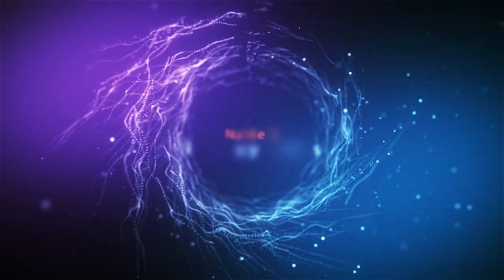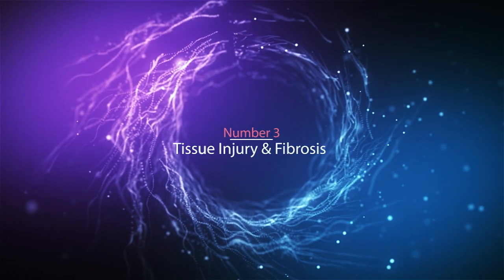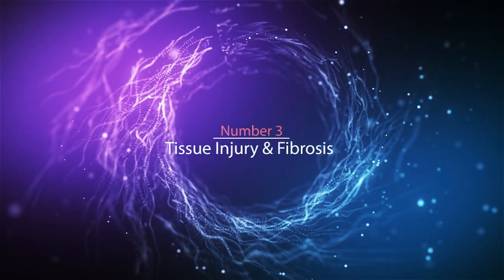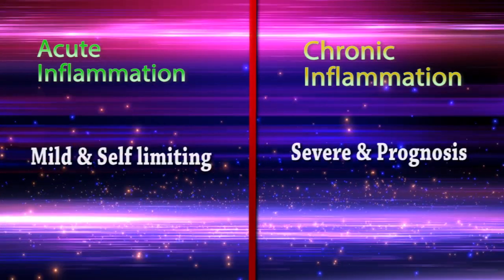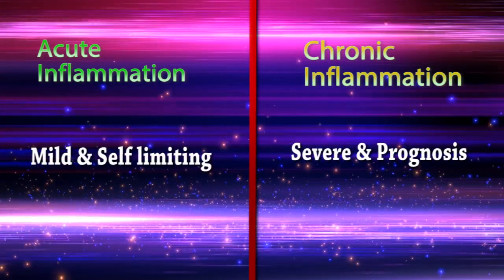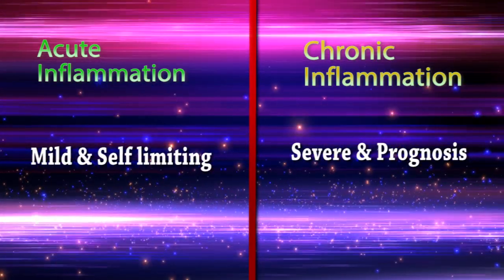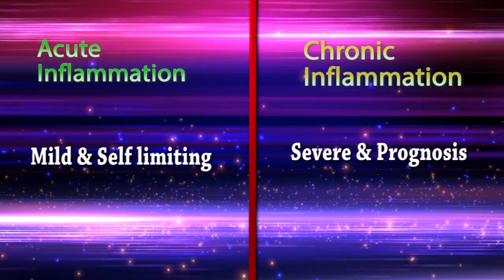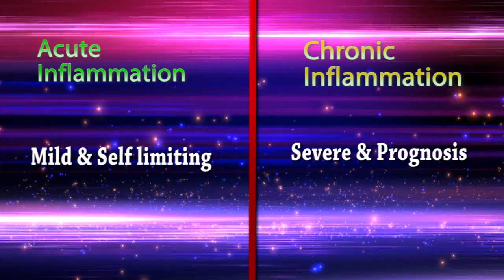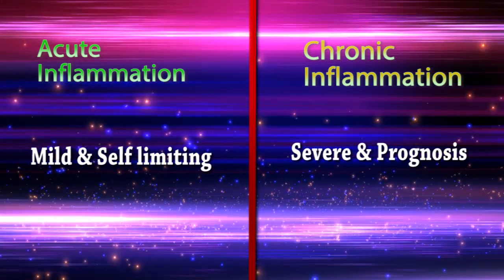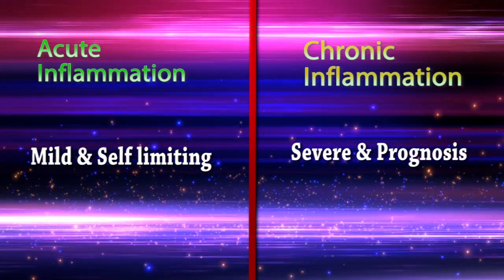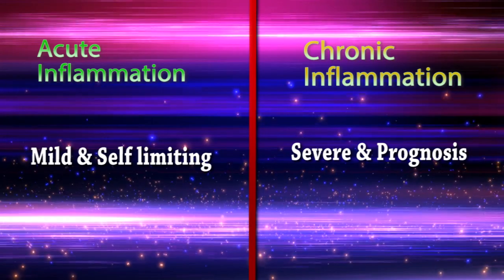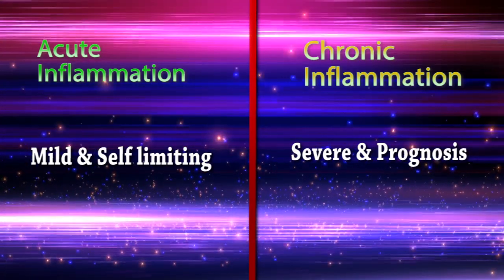Difference number three: tissue injury and fibrosis. In acute inflammation, tissue injury and fibrosis are mild and self-limiting. In chronic inflammation conditions, we can see severe and progressive tissue injury and fibrosis.